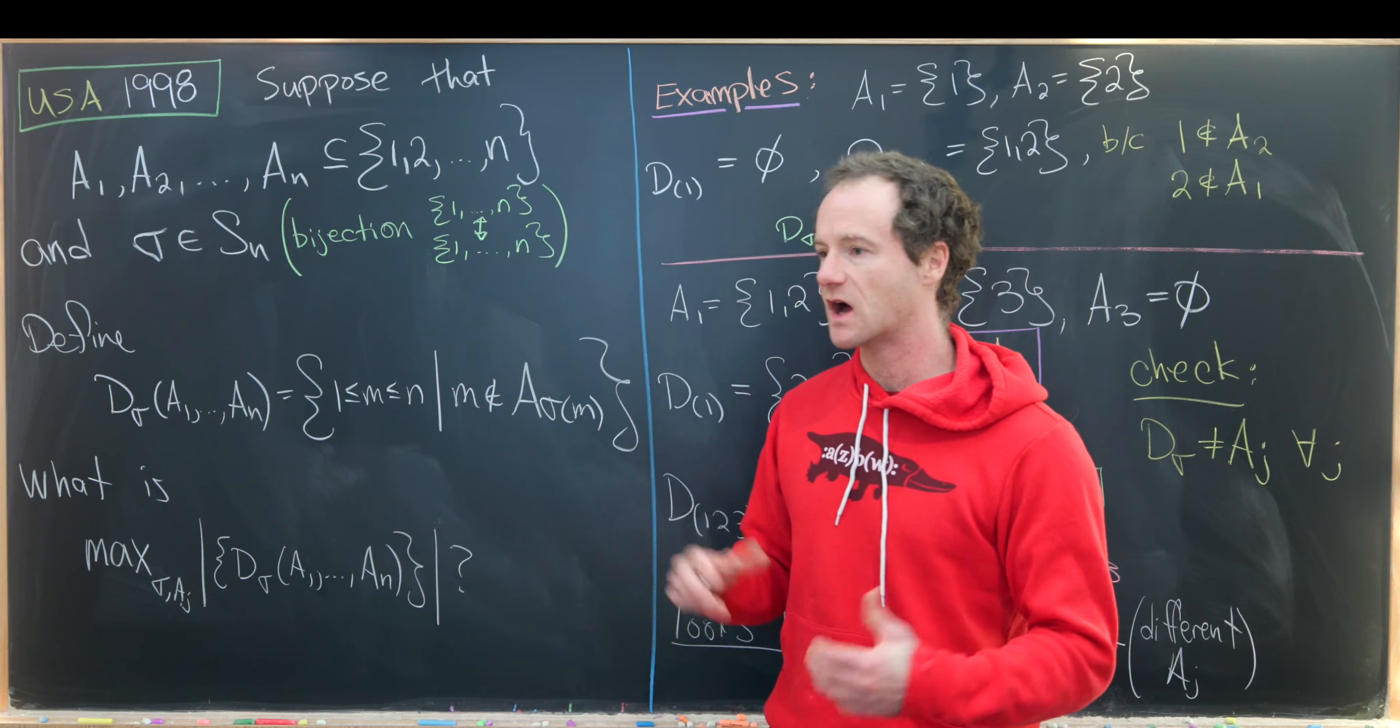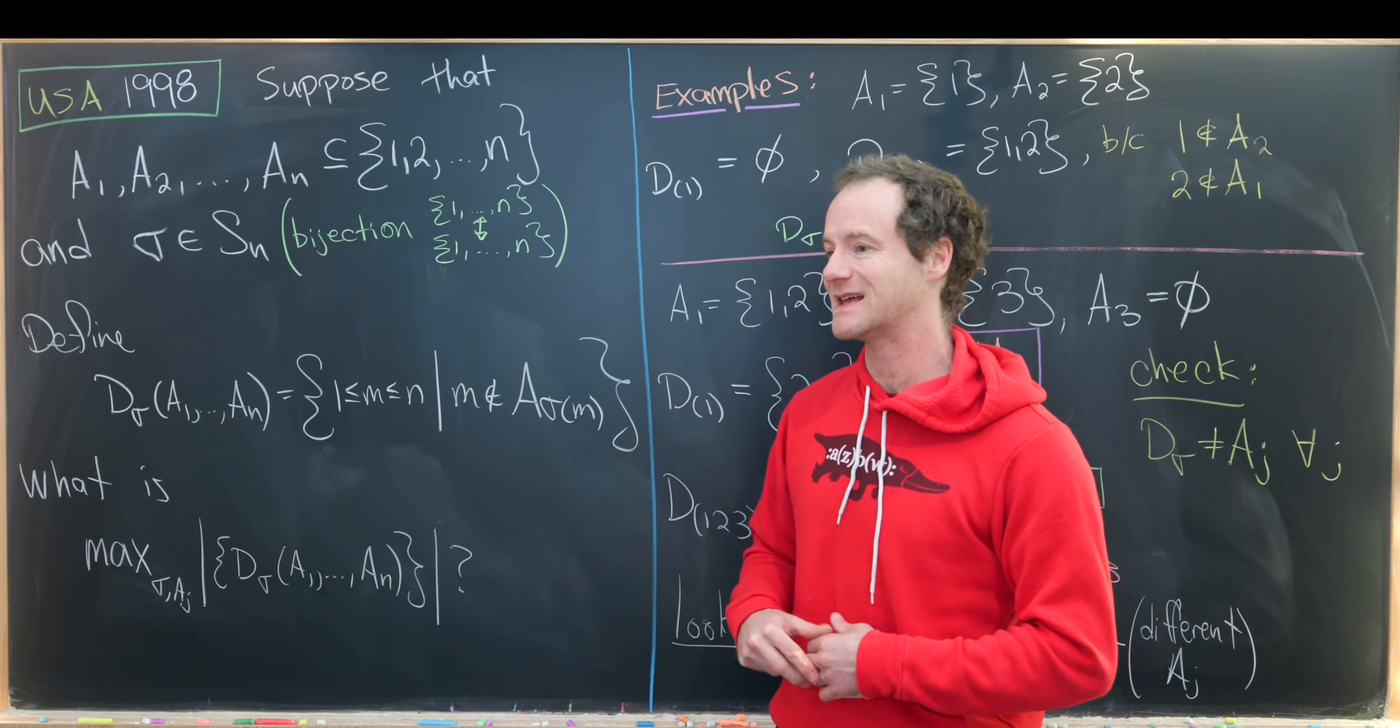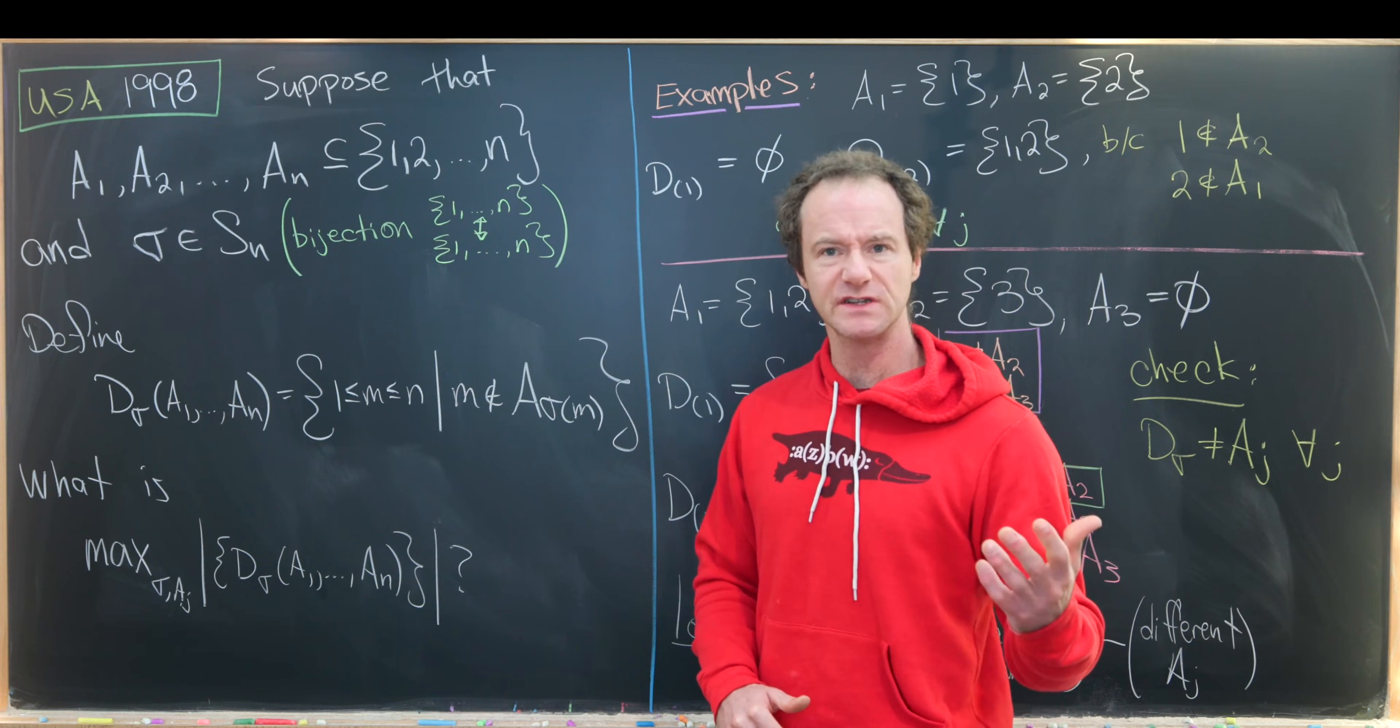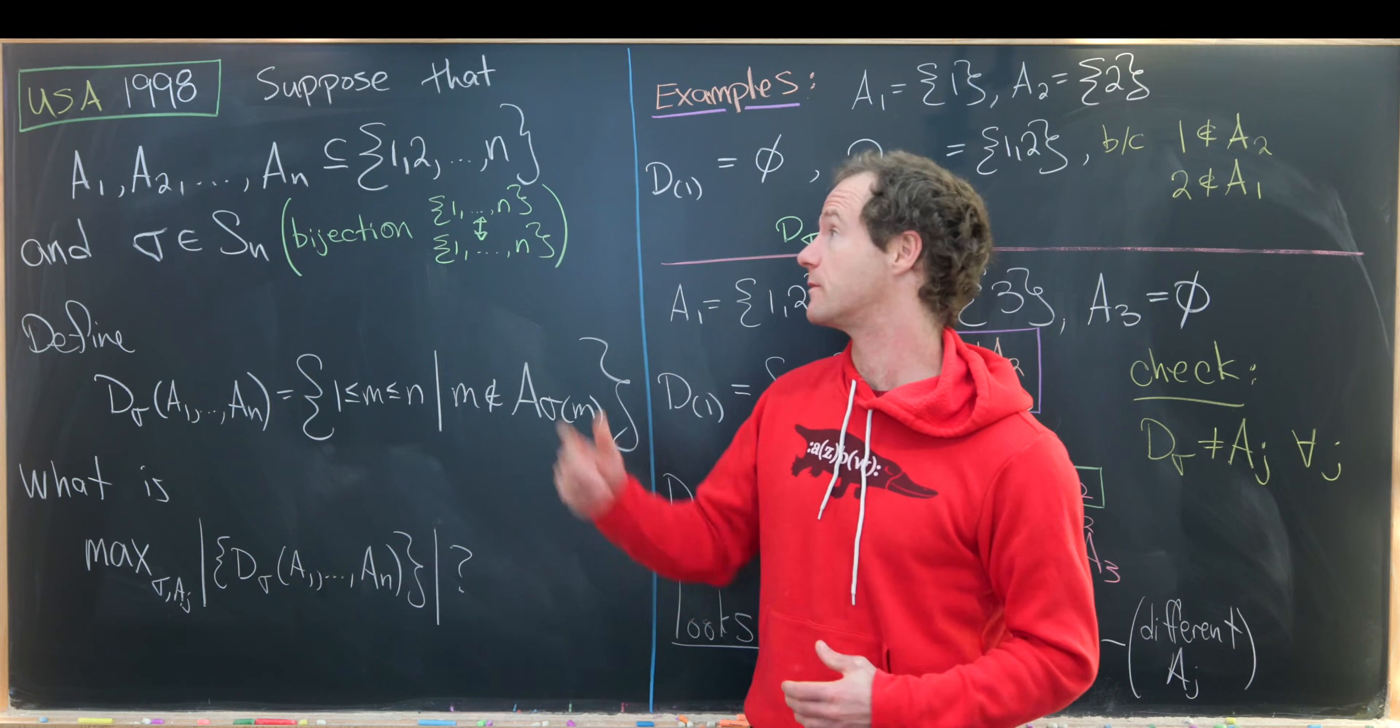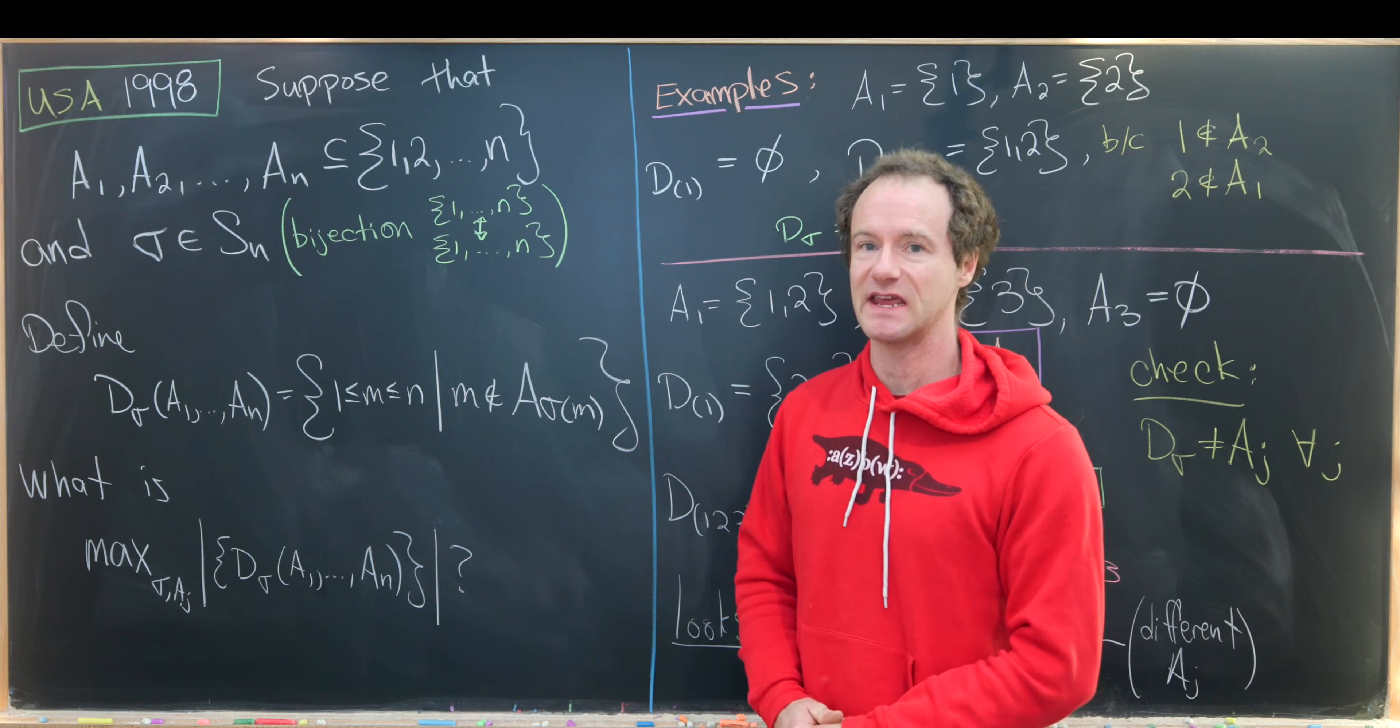Today I've got a sort of crazy combinatorial optimization problem based upon subsets and bijections of a certain set. This comes from a United States Math Olympiad from the year 1998. So let's dive into the statement of this problem.